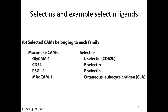In total, there are really only three selectins: L-selectin, P-selectin, and E-selectin. They each bind to different carbohydrates and are each found on different types of cells. I'll give you the specifics — which selectin and which carbohydrate for each situation — toward the end of today, but right now you just need to know there's a selectin binding to some carbohydrate.